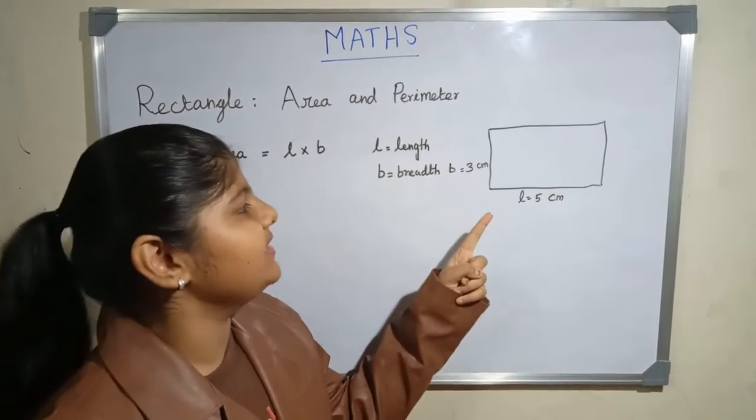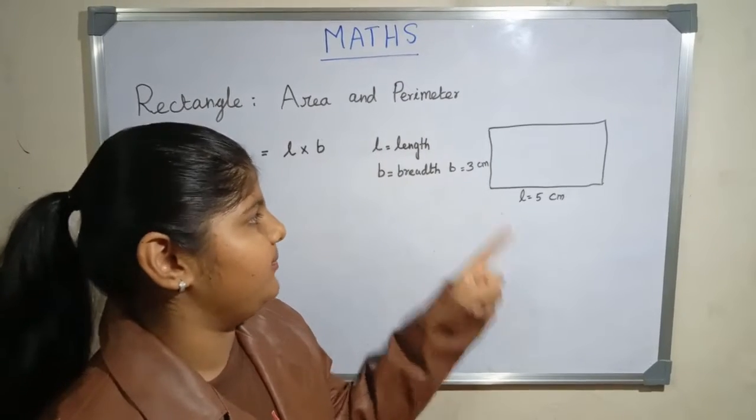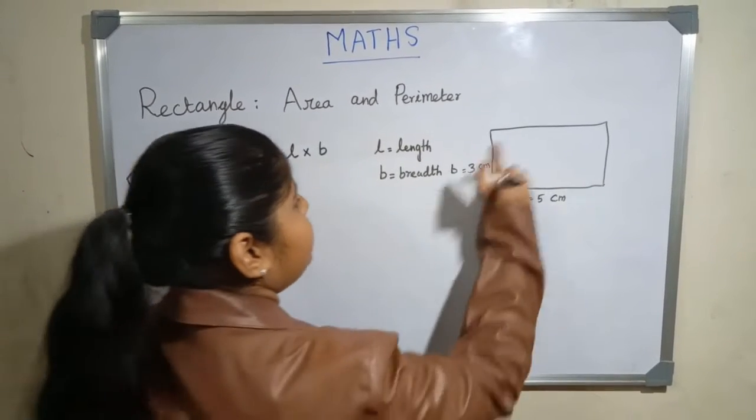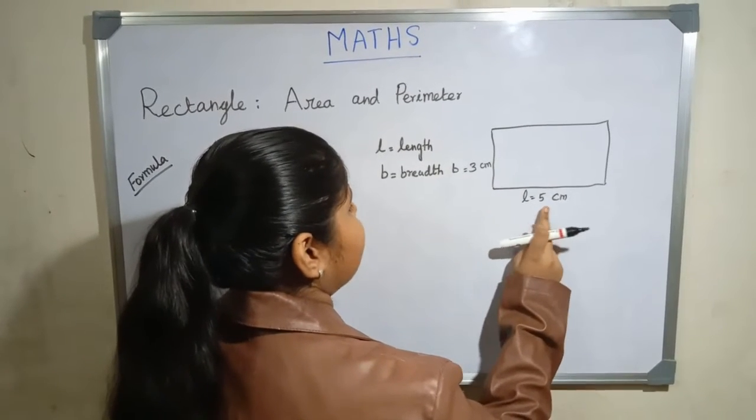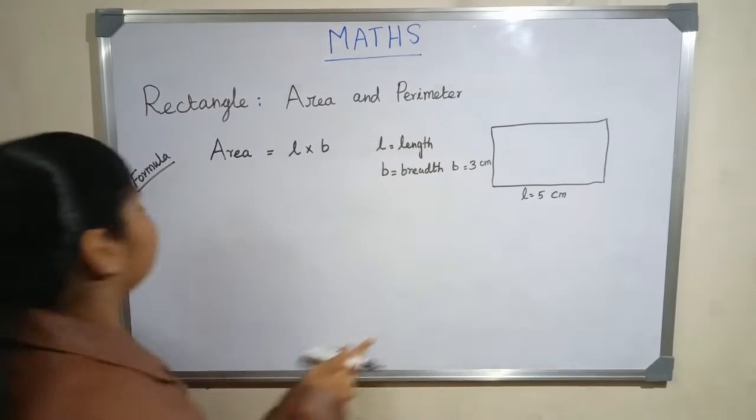In a rectangle, opposite sides are equal. Here, breadth is equal to 3 centimeters and length is equal to 5 centimeters.